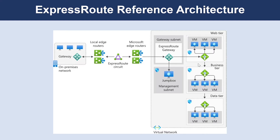Let's look at the reference architecture for ExpressRoute. This example shows how to connect your on-premises network to Azure Virtual Networks. The architecture includes several components. The on-premises network is your local Active Directory managed network. The local edge routers connect your on-premises network to the connectivity provider circuit. The ExpressRoute circuit supplied by your connectivity provider operates as a layer 3 circuit. It provides the link between Azure edge routers and your on-premises edge router. The Microsoft edge routers are the cloud-side connection, and there are always two edge routers, which provide a highly available Active-Active connection.